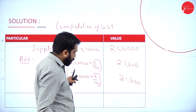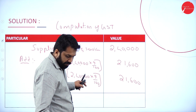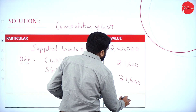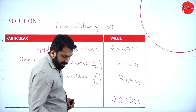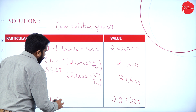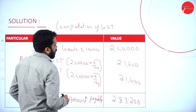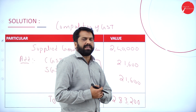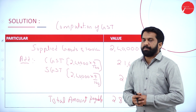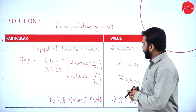Total: 2,40,000 plus 21,600 plus 21,600 equals 2,83,200. Total amount payable including GST is 2,83,200. If anything is within the state, you calculate 9% SGST and 9% CGST. Together that is 43,200, making the total 2,83,200.